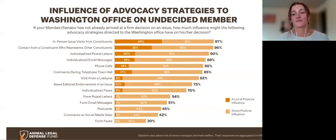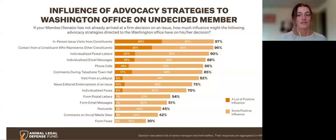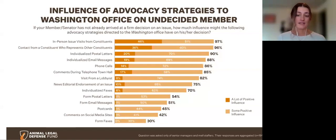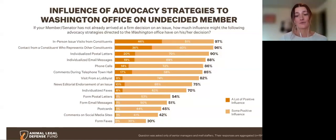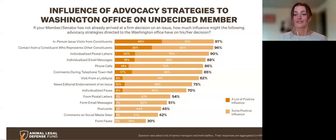Here's a graph with more results from that survey. Pay special attention to in-person visits, individualized messages, phone calls, comments during town halls, and form messages. The dark orange represents a lot of influence, whereas the lighter orange is some influence, with the number at the end of the bar being that combined influence. Forum emails are at the bottom and in-person constituent meetings are at the top. Phone calls are much better than form emails. Everything here is important — even the bottom strategies still carry influence.